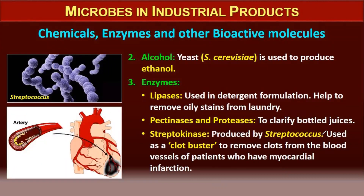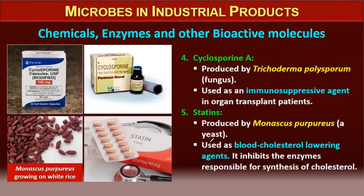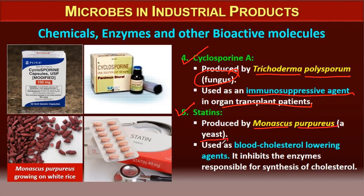Streptokinase, produced by Streptococcus, is used as a clot buster to remove clots from blood vessels of patients who have had myocardial infarction. Cyclosporin A, produced by Trichoderma polysporum (a fungus), is an immunosuppressive agent used during organ transplant. Statin, produced by Monascus purpureus (a yeast), is used as a blood cholesterol-lowering agent that inhibits the enzyme responsible for synthesis of cholesterol.